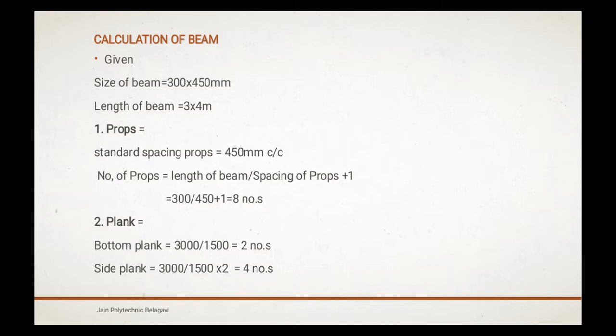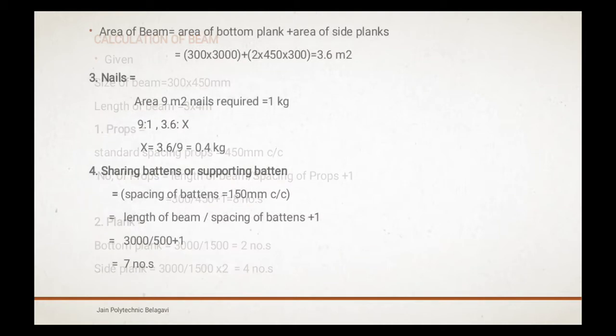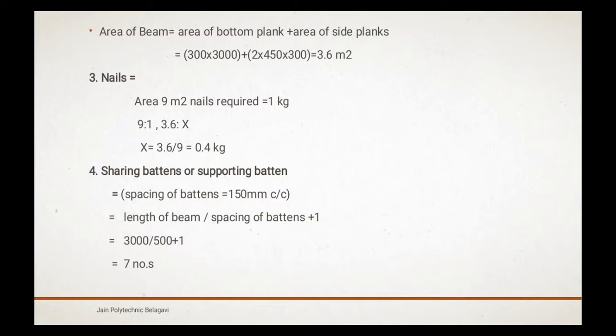So shearing batten formula is length of beam divided by spacing of batten plus 1. Spacing of batten is 150 mm center to center. So shearing batten we got 7 numbers. Formula: 3000/450+1 = 7 nos.